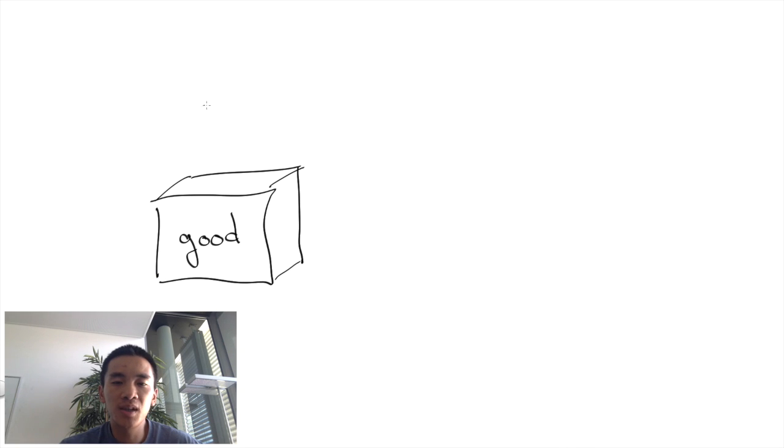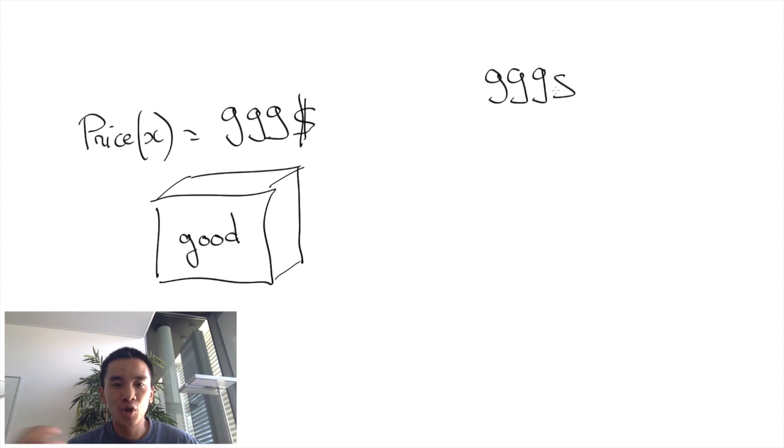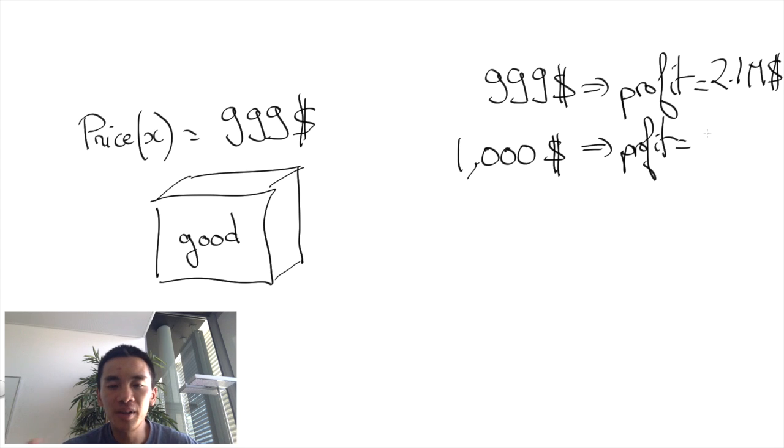Suppose you want to set a price of a good based on data from a database. The trouble of the Laplace mechanism is that a small perturbation of the price could completely change the demand and thus the profit.